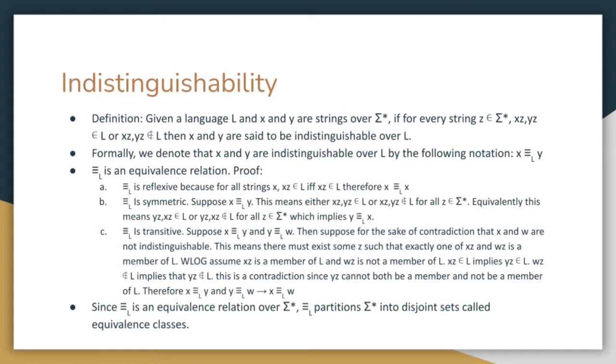Suppose that we have a language L and two strings X and Y over the alphabet of L. X and Y are said to be indistinguishable if, for all strings Z, XZ and YZ are either both members of L or neither are members of L.